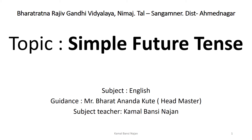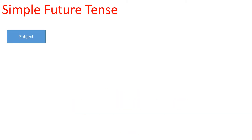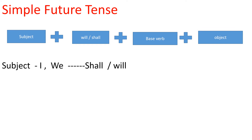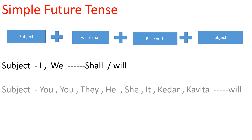Hello children, today we are going to learn simple future tense. Let's learn simple future tense. In simple future tense, the structure of the sentence is subject plus will or shall plus base verb plus object. It's very simple to understand the structure.